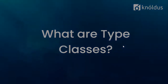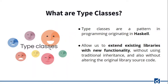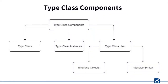Type classes are a programming pattern originating in Haskell. They allow us to extend existing libraries with new functionality without using traditional inheritance and without altering the original library source code. There are three important components to the type class pattern: first, the type class itself; second, the instances for a particular type; and third, the methods that use type classes. In Scala, type classes are implemented using implicit values and parameters, and optionally implicit classes. Scala language constructs correspond to these components: traits are the type classes, implicit values are the type class instances, and implicit parameters are the type class usage.